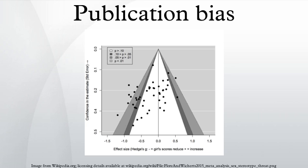Strategies are being developed to detect and control for publication bias, for instance down-weighting small and non-randomized studies because of their demonstrated high susceptibility to error and bias, and P-curve analysis.